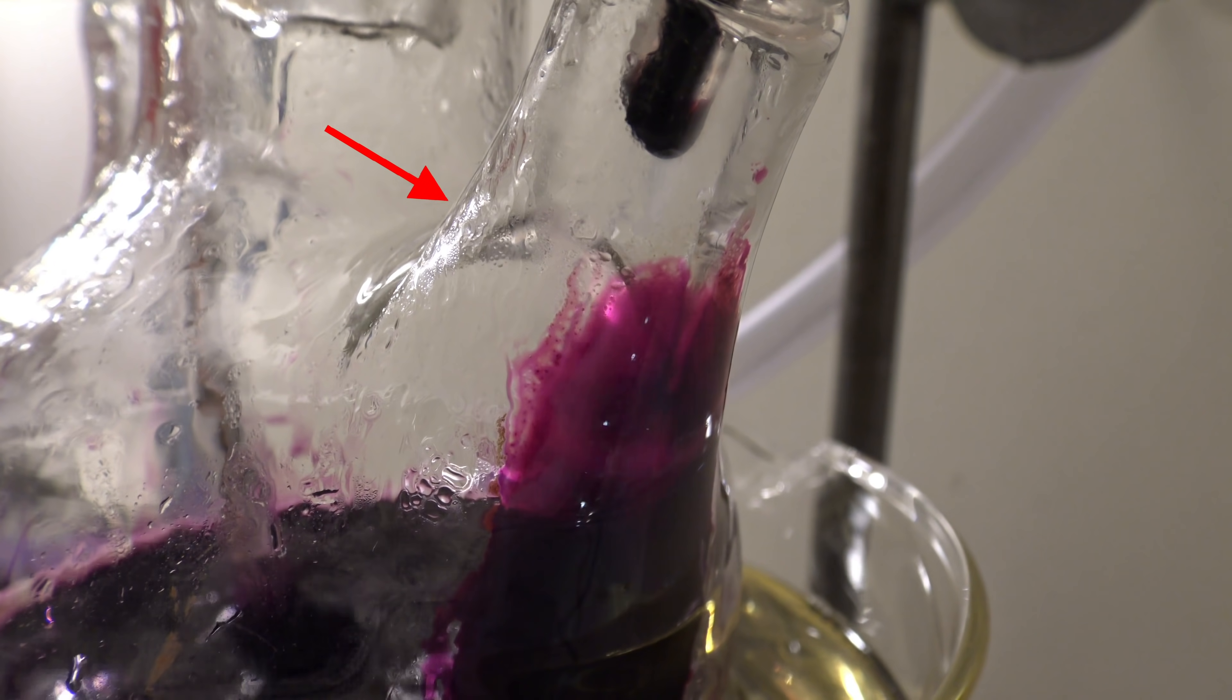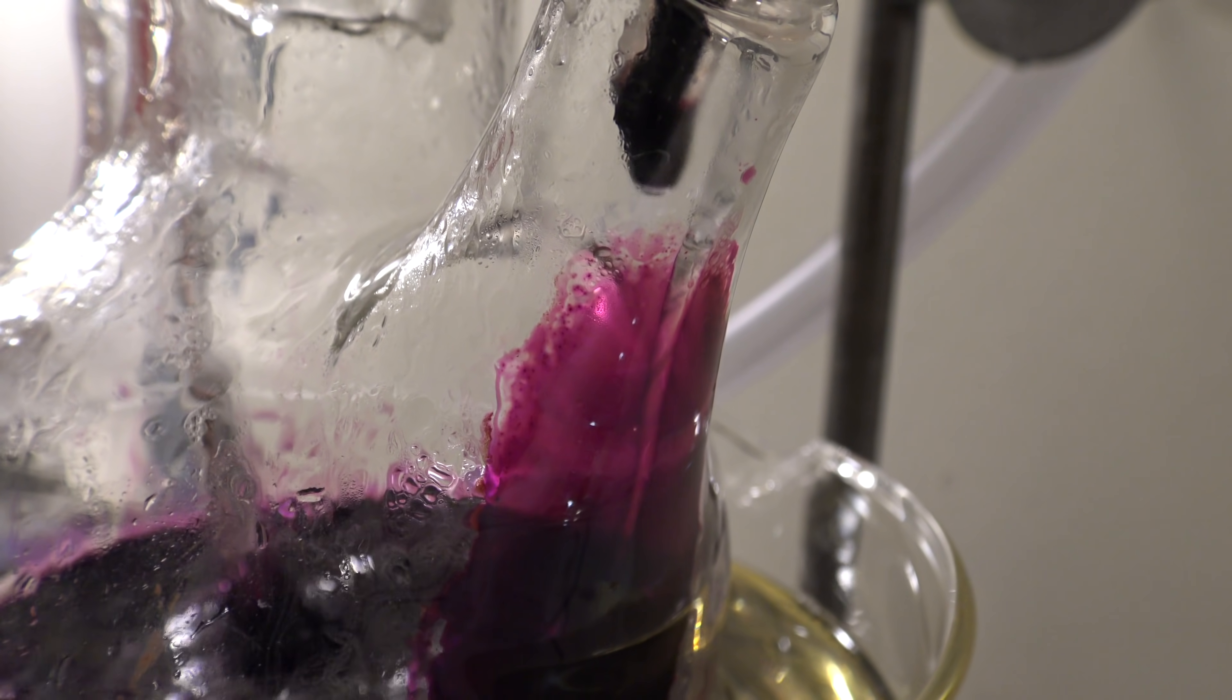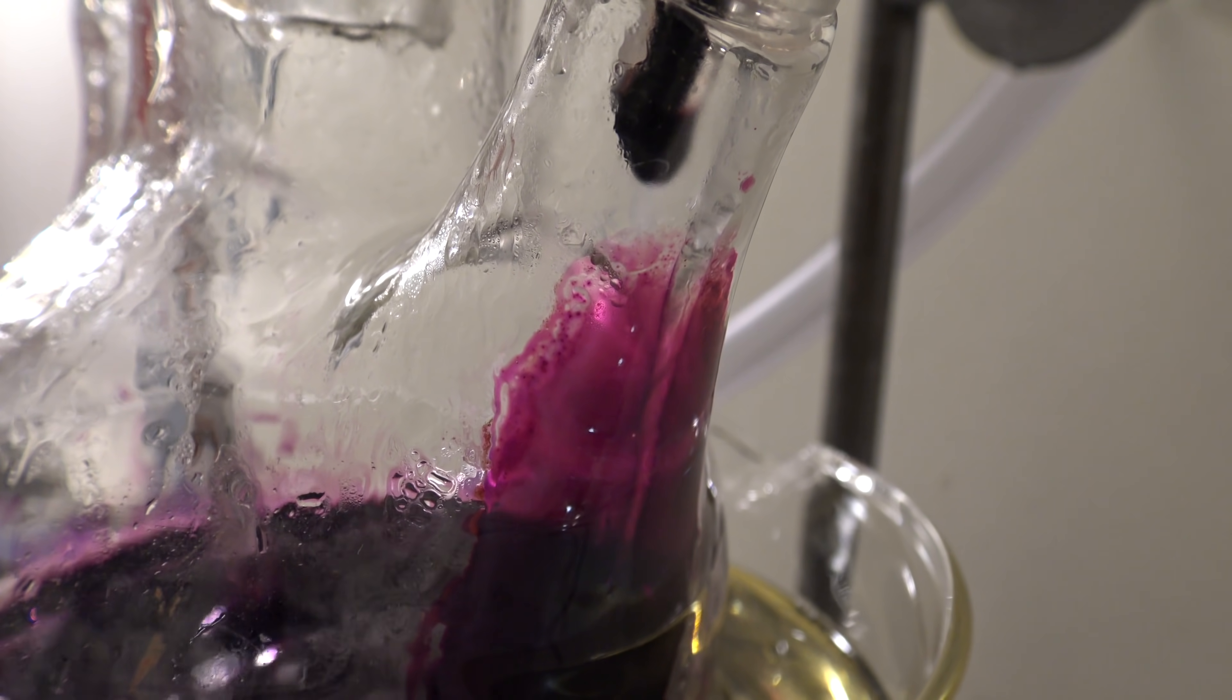When the azeotrope cools, it separates into toluene and water again. This can be used to see if there are still large amounts of toluene present.